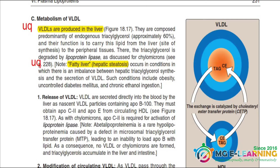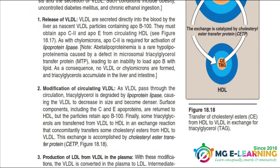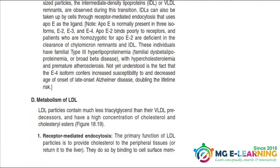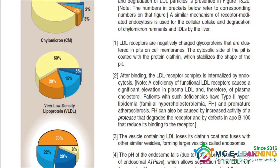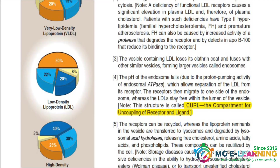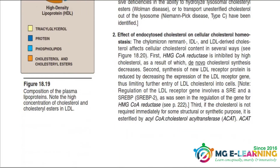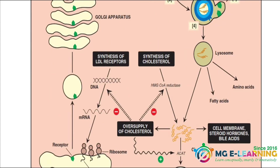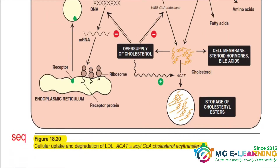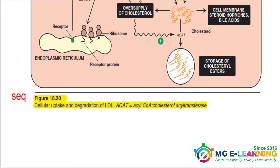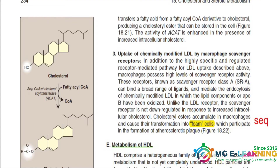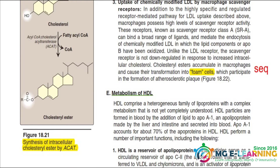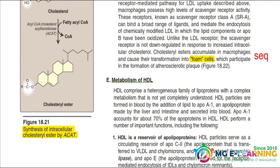This is a very important figure. You should know how to interpret it — everything is linked here. Understand how cholesterol is made: which are the regulators, stimulators, and inhibitors. After that, we look at foam cells, which is a very important SCQ and viva topic. Synthesis of intracellular cholesterol esters from figure 18.21 is also important.